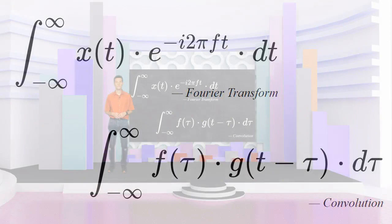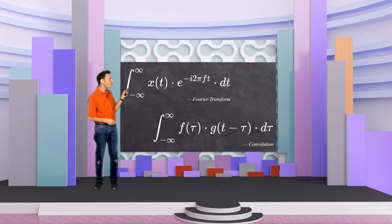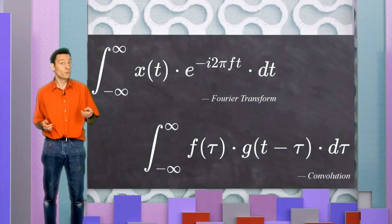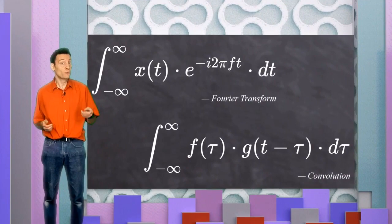So, here's your challenge for this video. Which term in the Fourier transform equation is equivalent to the f of tau term, and which term is equivalent to the g of tau term? You'll find the answer in the next video, when we explore how the imaginary number i helps the Fourier transform take a convolution shortcut.